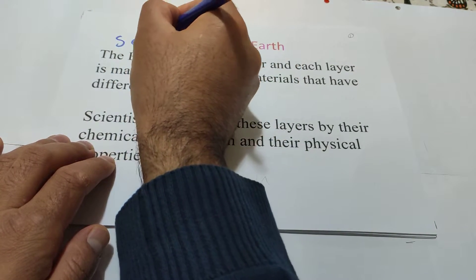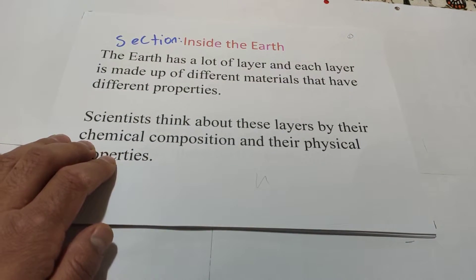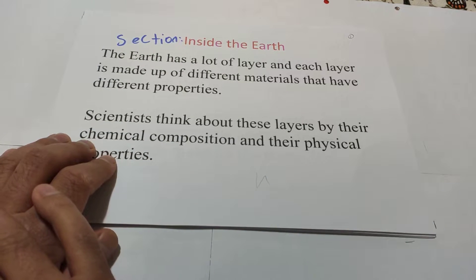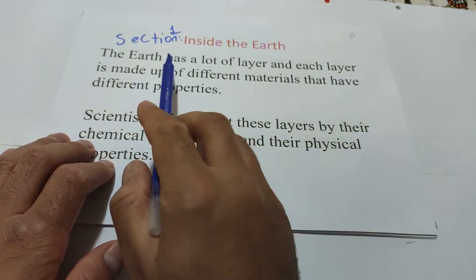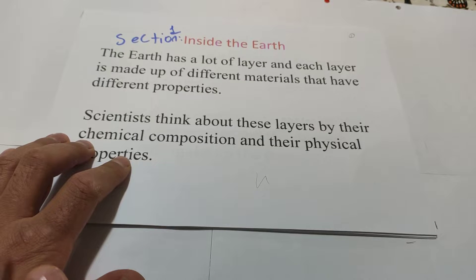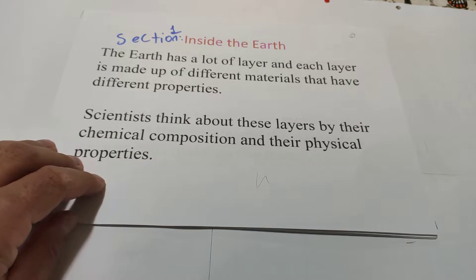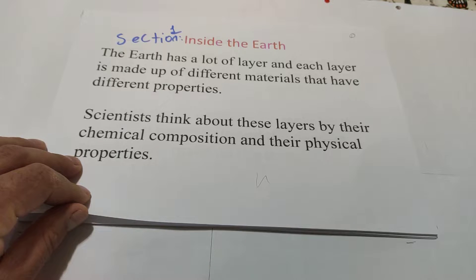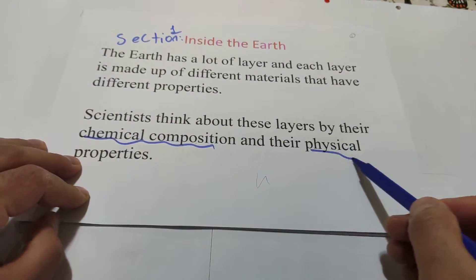Students, let us start our lesson. Chapter 7, Section 1. If you have a notebook and pen, we can start our lesson. The earth has a lot of layers and each layer is made up of different materials that have different properties. Scientists think about these layers by their chemical composition and their physical properties. Today we are going to check the chemical composition and physical properties.